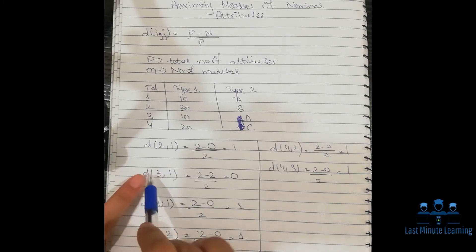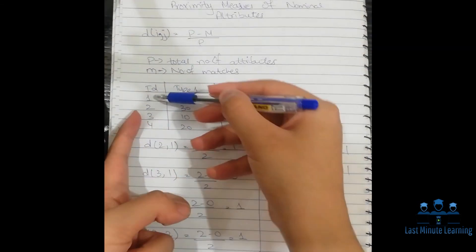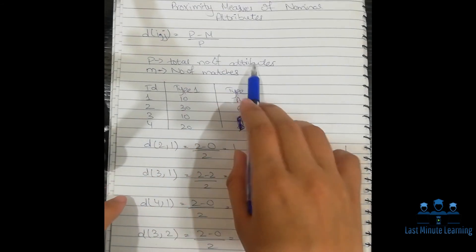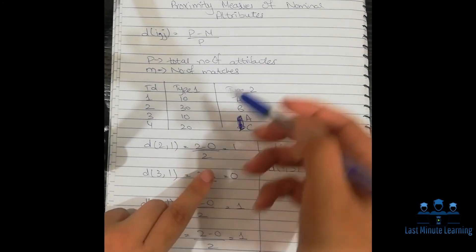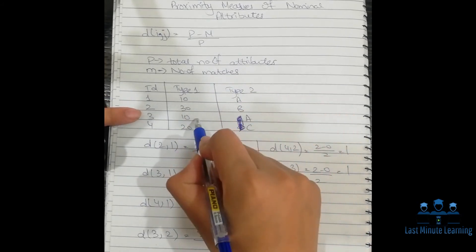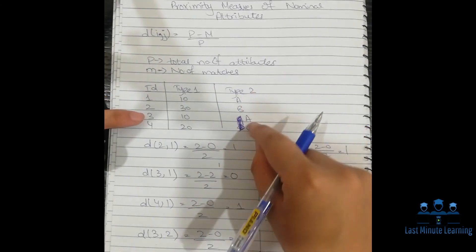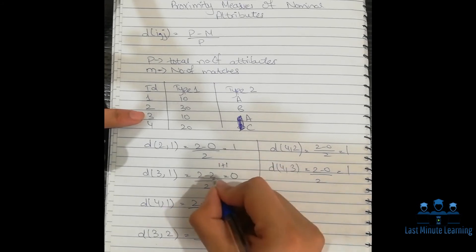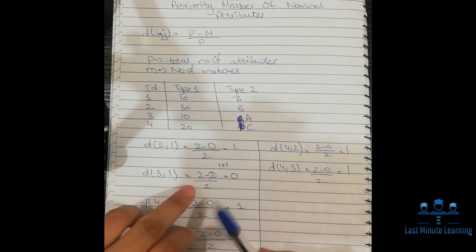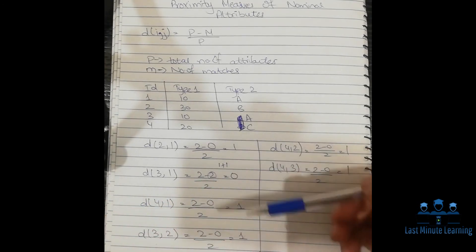d(3,1) is the difference between 3 and 1. Now p equals the number of attributes, which is 2, minus the number of matches. 10 and 10, yes, which means one match occurred. Second is a and a, which means another match occurred, so two matches are there. After applying the formula, we get the answer zero. In the same way, we will do the remaining parts.